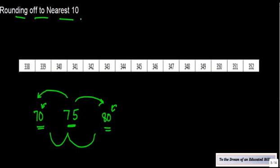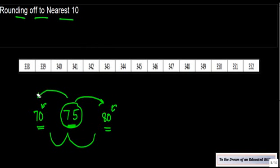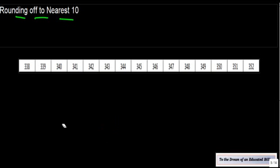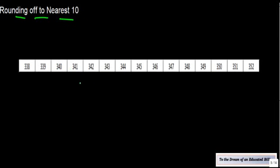By rounding off to the nearest ten what we mean is we round off the number or if we have to represent it as a multiple of 10, we see whether it is close to 70 or 80 and whichever one is the closest we round it off accordingly. Now you must be a little confused in terms of what will happen to 75, but that we will see shortly.